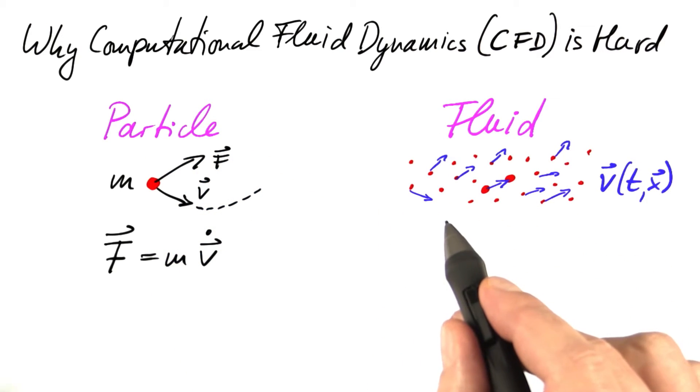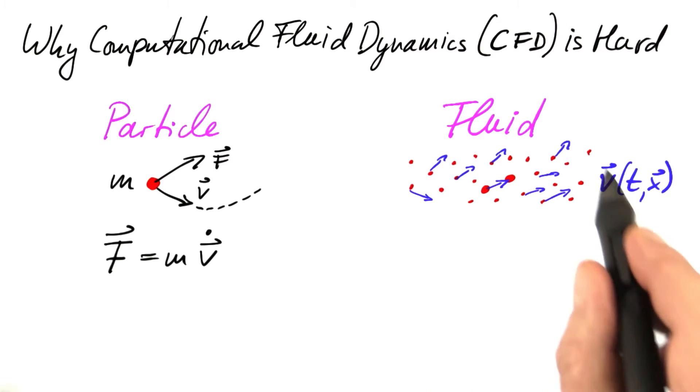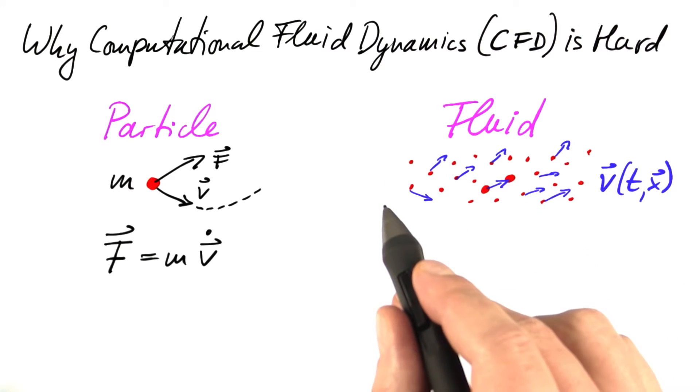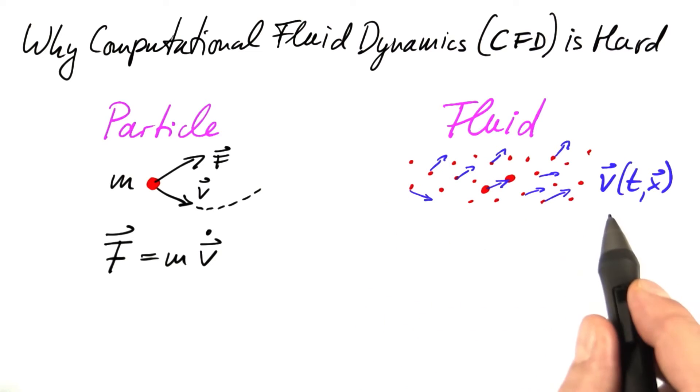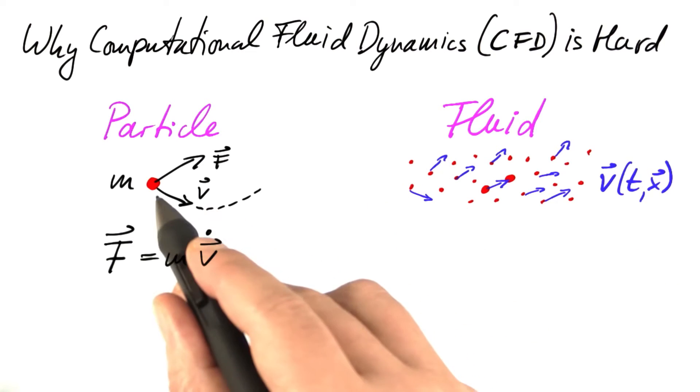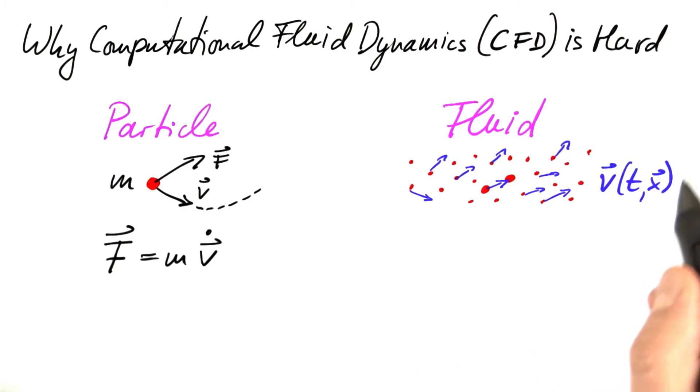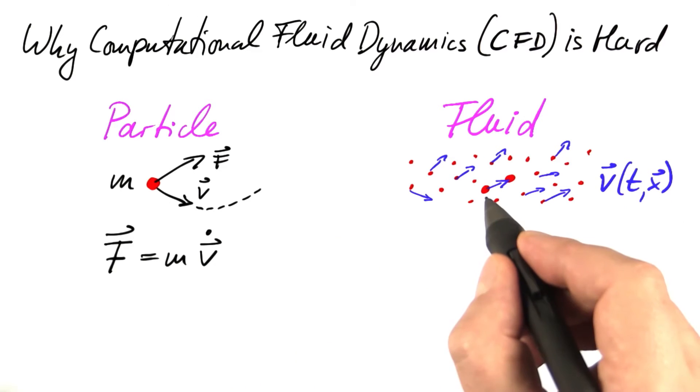For the fluid, something similar has to happen, but now we're not dealing with a single particle, we're dealing with a virtually infinite amount of particles. And what we're working with is not the velocity of the particle, it's a velocity field. For every position in space, we specify the velocity.